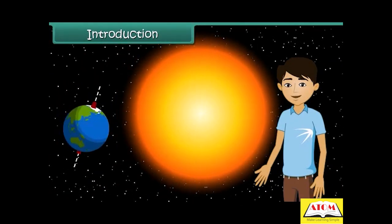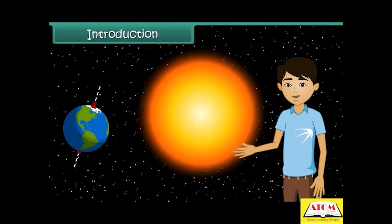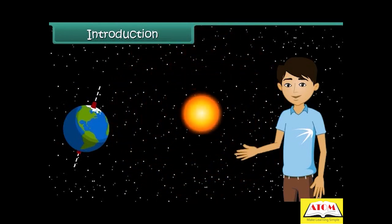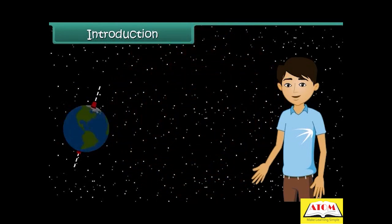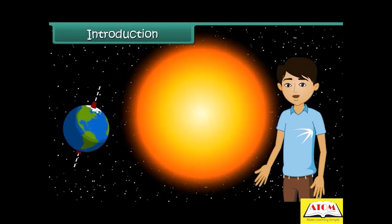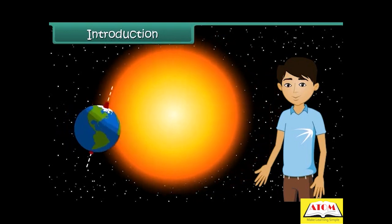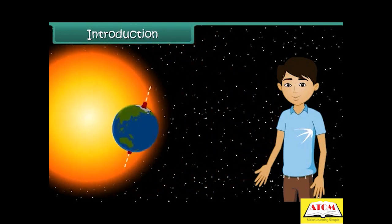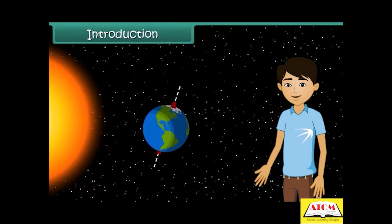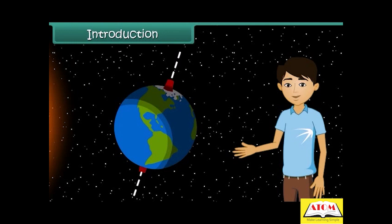Hello students, can you imagine how cold the earth would be if there were no sun? The sun is the earth's main source of heat. Only a little of the sun's heat reaches the earth; however, this is enough for life to exist on earth.